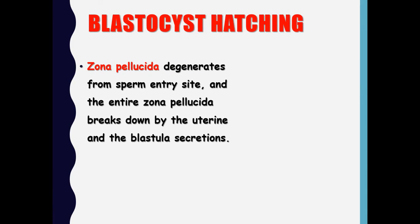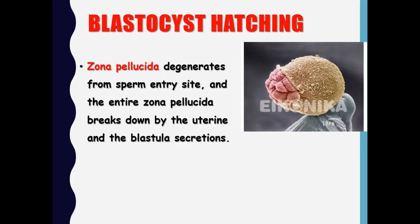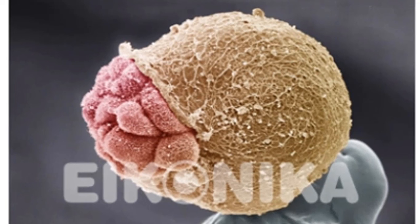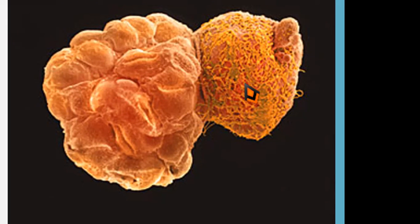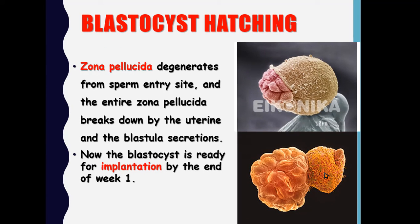Regarding blastocyst hatching: the zona pellucida will degenerate, starting from the sperm entry side which is now the weakest point, and the entire zona pellucida breaks down by the enzyme and blastocyst secretions. The increased pressure inside the blastocyst breaks through this weak point and the blastocyst hatches out, freeing itself completely from the zona pellucida. Now the blastocyst is ready for implantation by the end of the first week of development. This is the end of my presentation — thanks for listening.